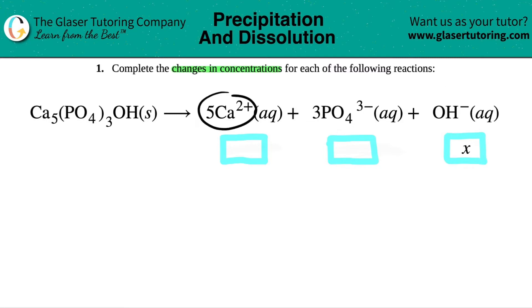We have five Ca2+, we have three PO43-, and we have one OH-. Now they give us a little head start as to what the change in the hydroxide would be, but the question is, what would this change be, and what would this change be for the calcium?